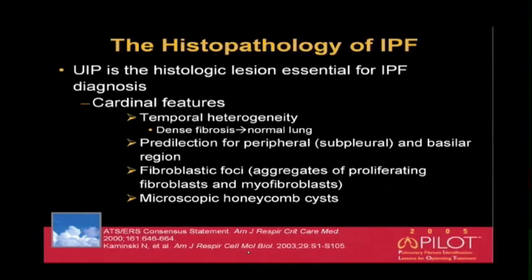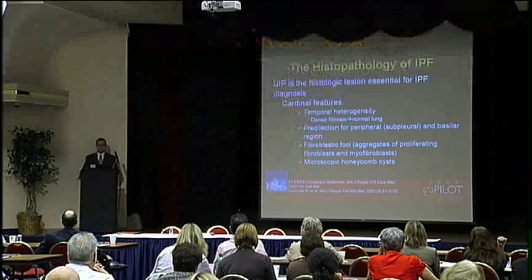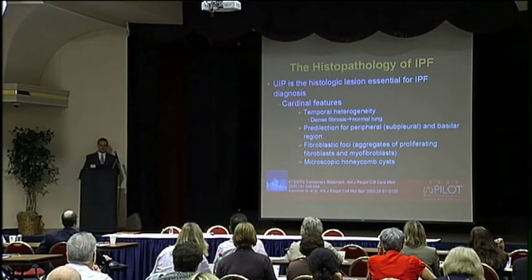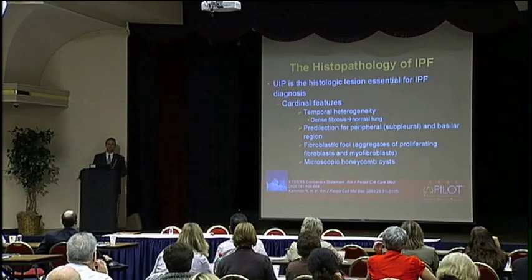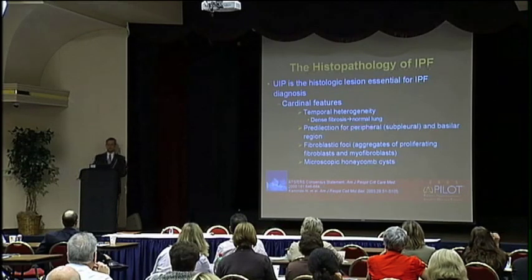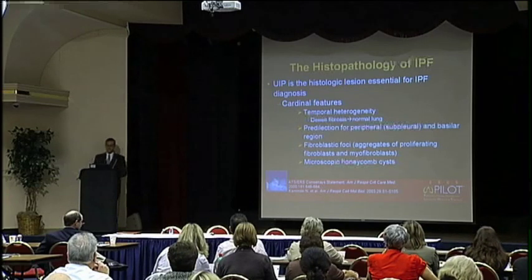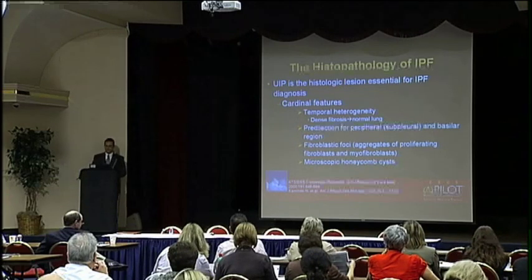There are interesting histologic features called fibroblastic foci — aggregates of proliferating fibroblasts and myofibroblasts with relatively young connective tissue — and these have been a focus of a lot of research. They are thought to be seen at the leading edge of fibrosis, and if we can unravel what's going on in these fibroblastic foci, that may tell us a lot about pathogenesis and help prevent disease progression.